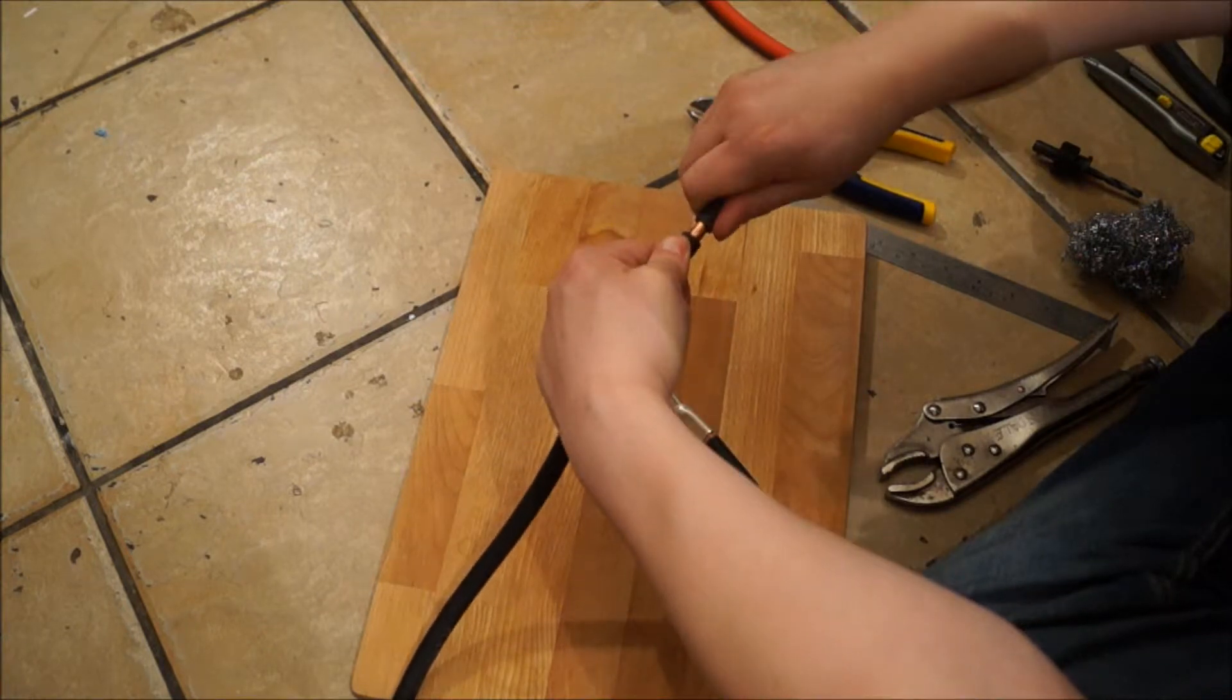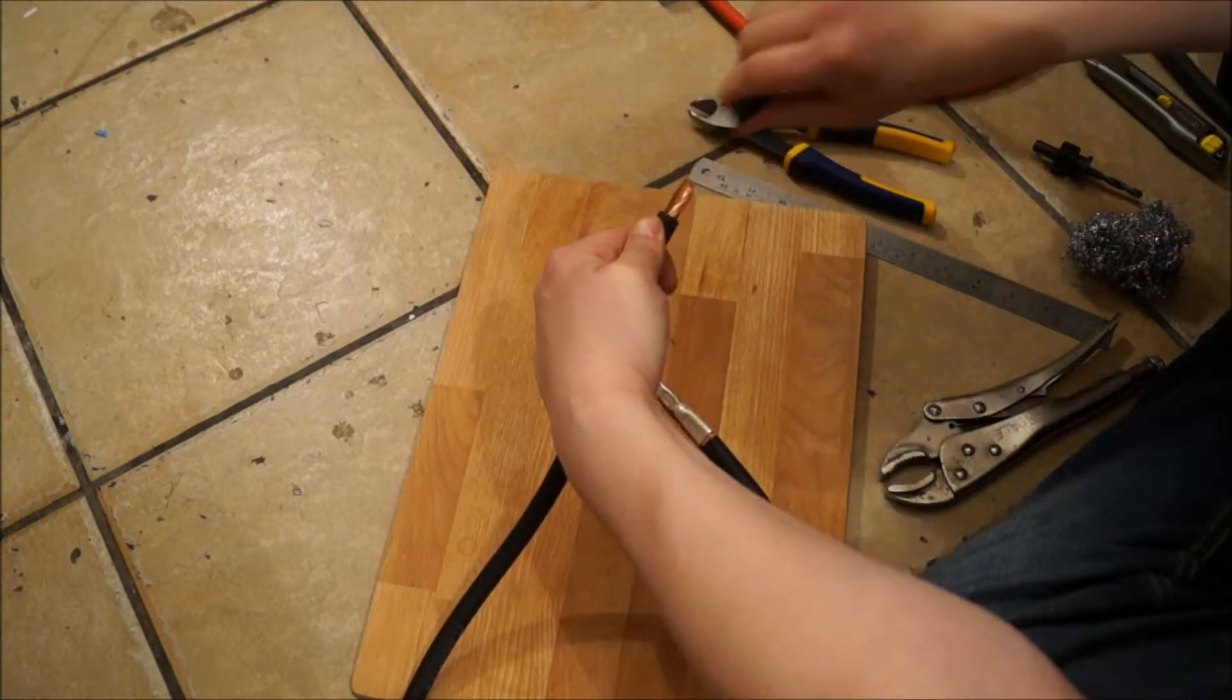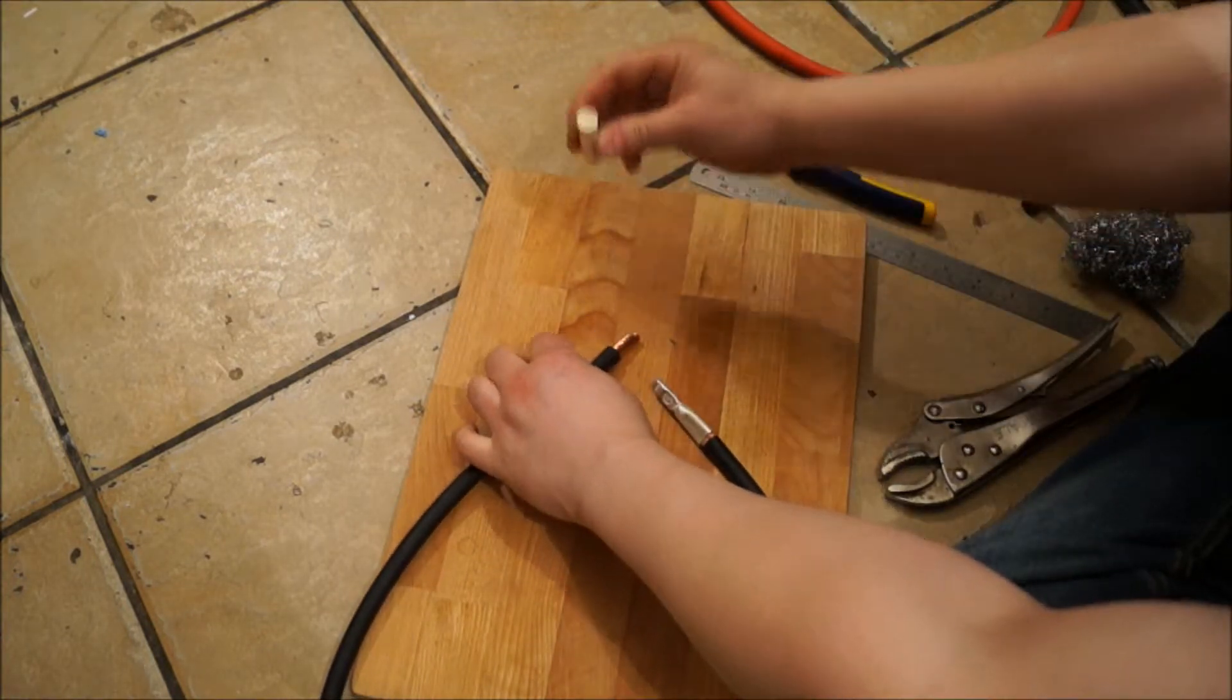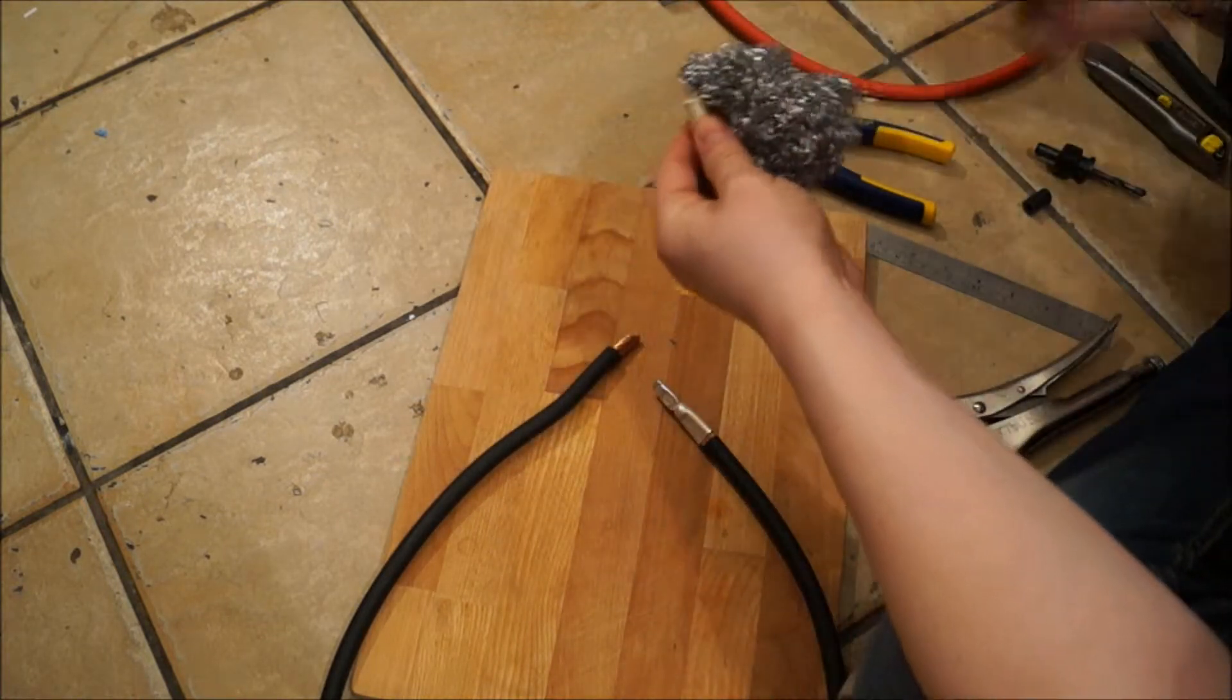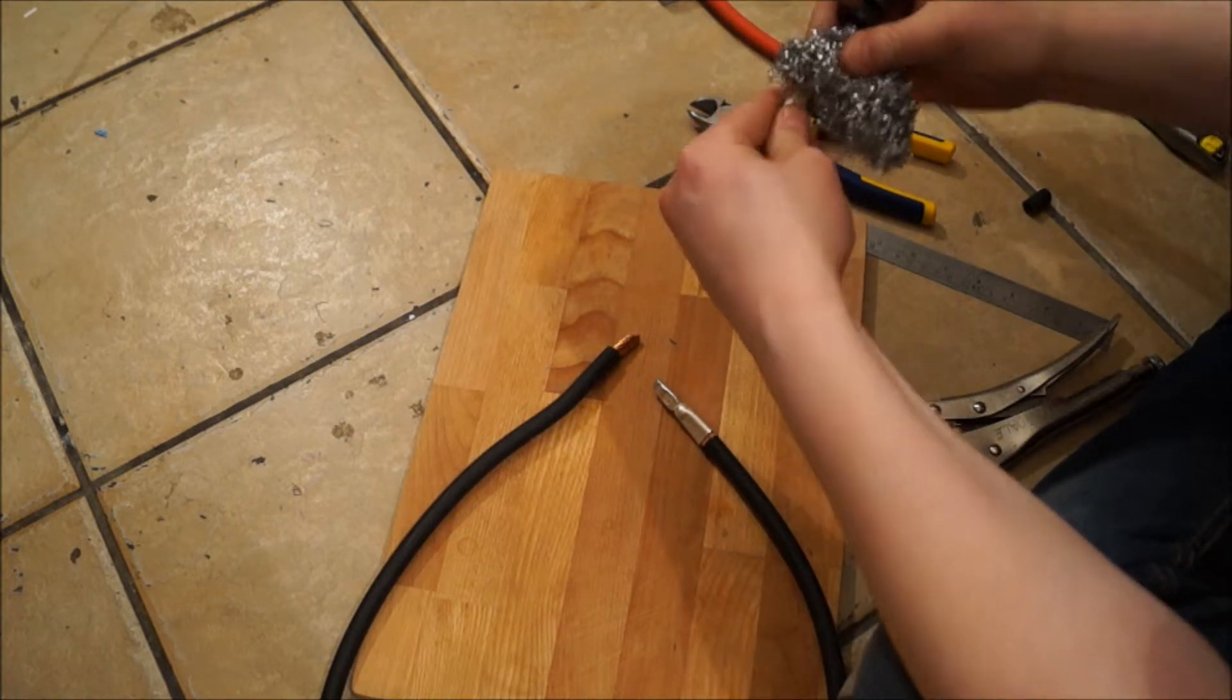As I pull the insulation away, I give it a twist and that just braids the cable together. Before you put this terminal, you slide this into there. It's a good idea to give it a good clean inside using some wire wool.